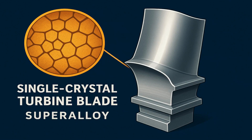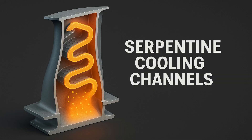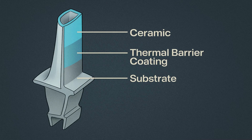To achieve higher efficiency, engineers push engine temperatures to the limits. Turbine blades now use single-crystal super-alloys that contain no grain boundaries for maximum strength. They carve intricate serpentine cooling channels inside each blade and inject compressor air through microscopic holes to form a protective film. Thermal barrier coatings add another layer of insulation. Fan cases use aluminum-titanium alloys for strength and light weight. Ceramic matrix composites appear in shrouds and liners, where extreme heat resistance matters most.